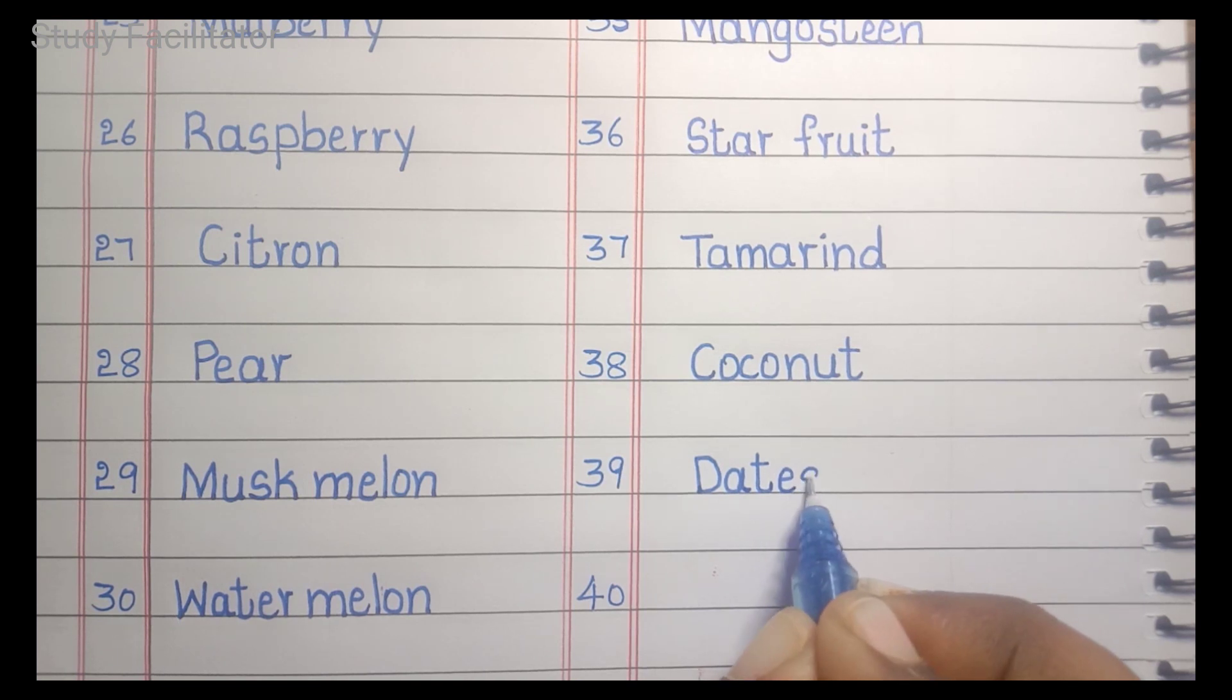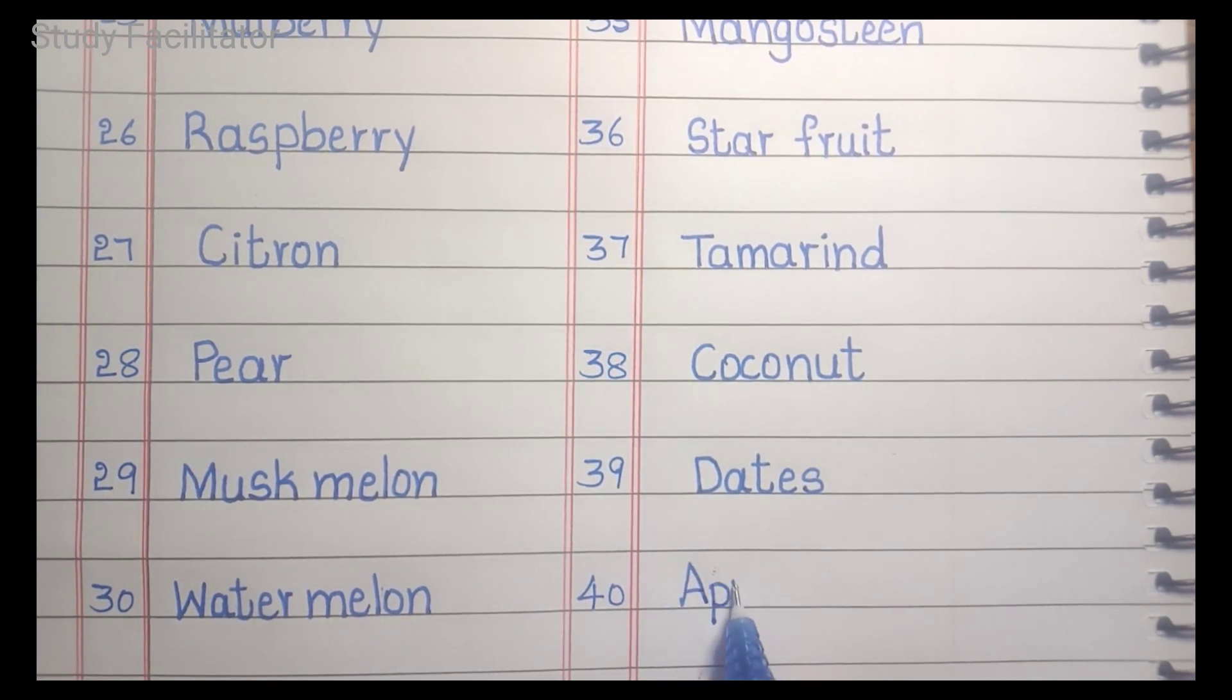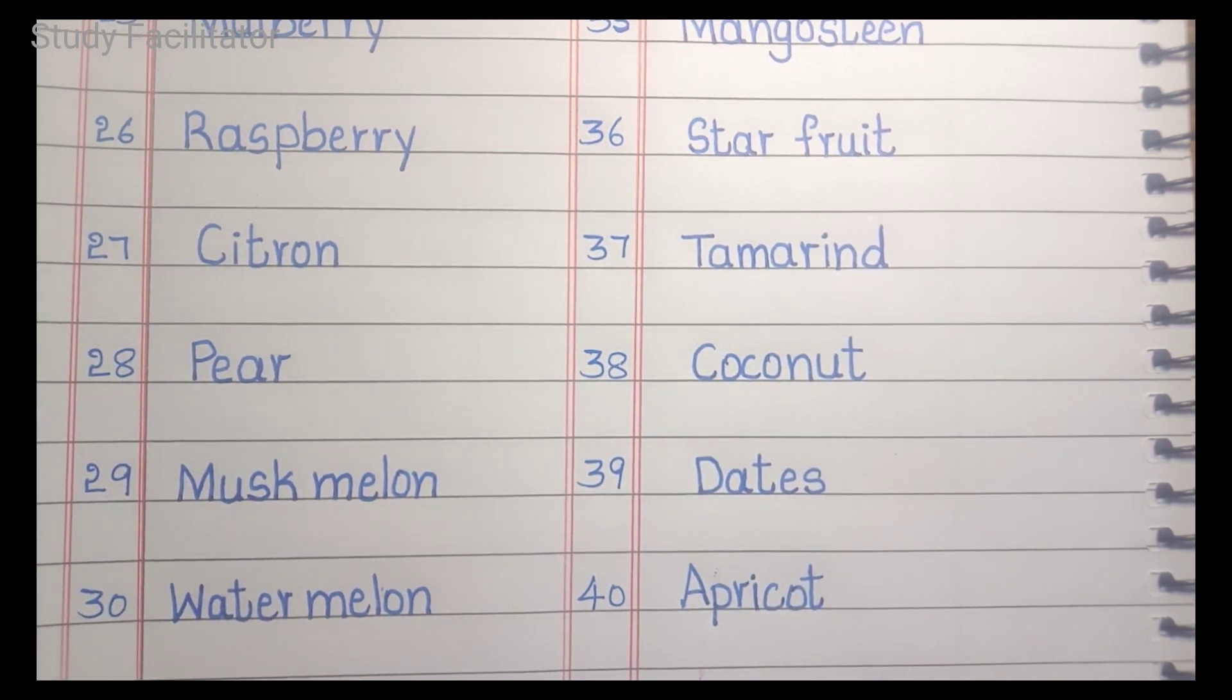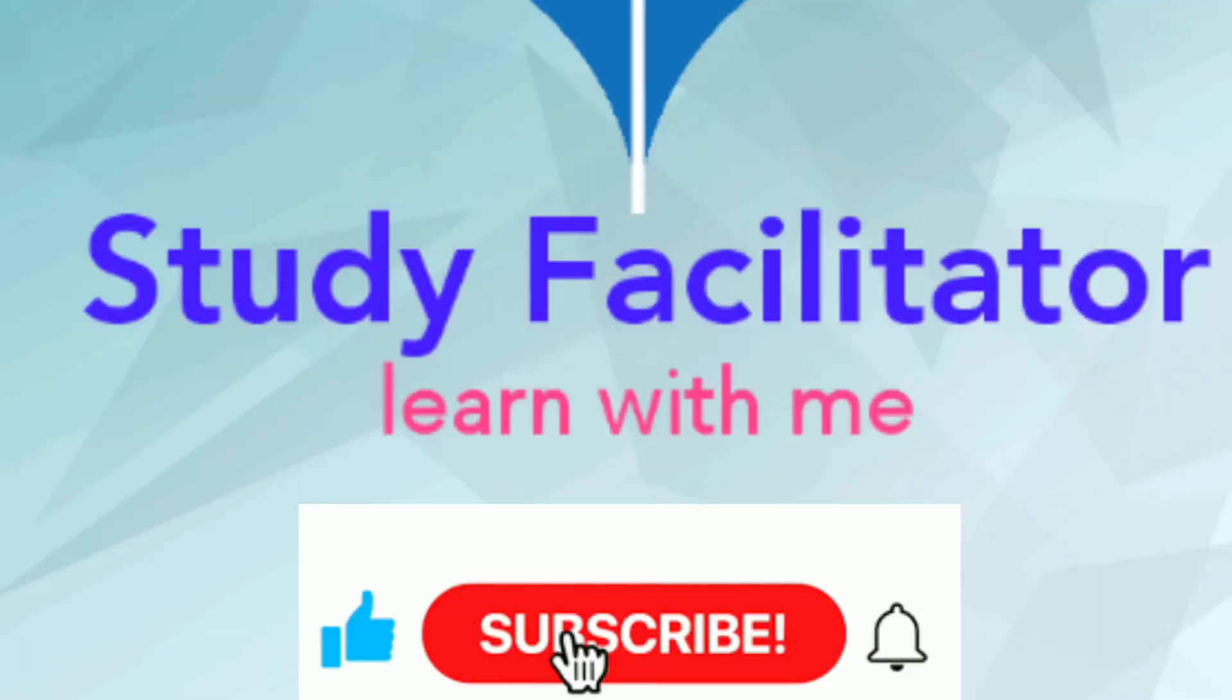Dates. Apricot. A, P, R, I, C, O, T. Apricot. Thanks for watching our video. Please subscribe our channel. Thank you.